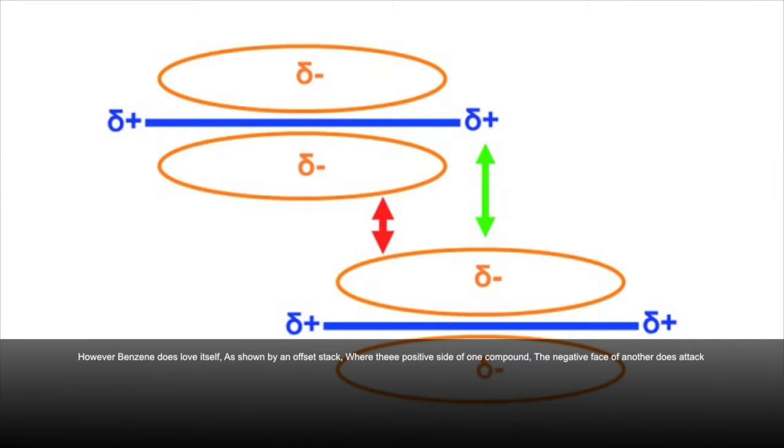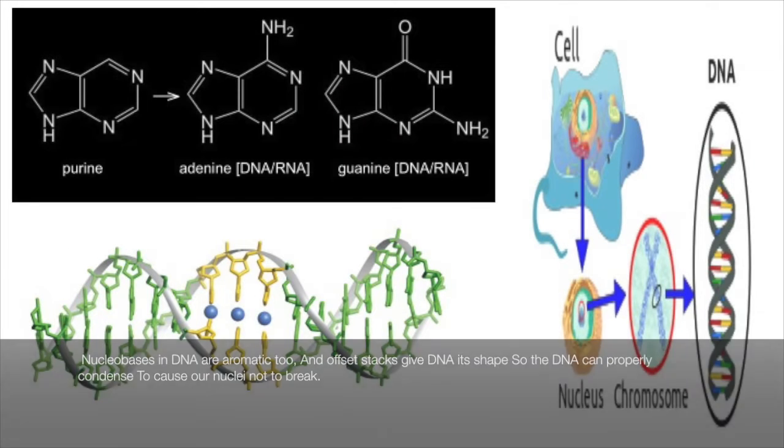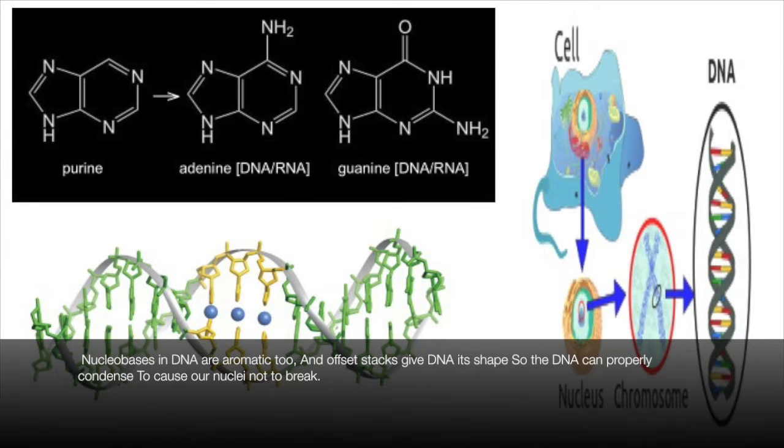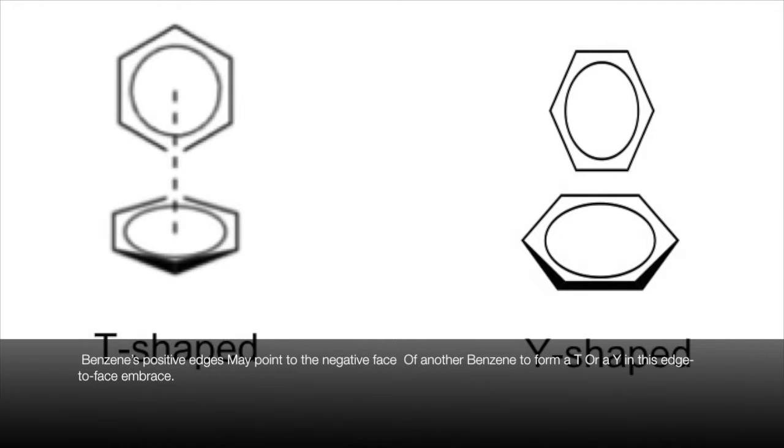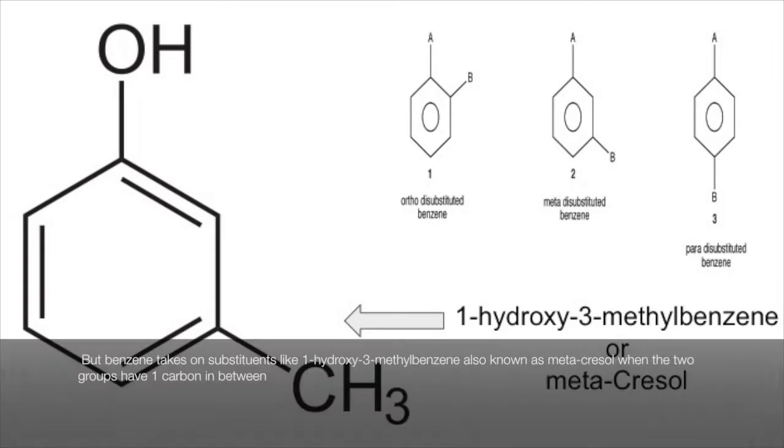However, benzene does love itself as shown by an offset stack, where the positive side of one compound, the negative base of another does attack. Nucleic bases and DNA are aromatic too. An offset stack of DNA shapes the DNA, can properly condense to cause our nuclei not to break. Benzene's positive edges may point to the negative face of another benzene to form a T or a Y in his edge-to-face embrace.